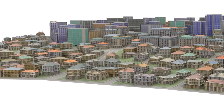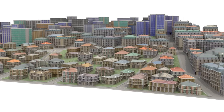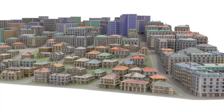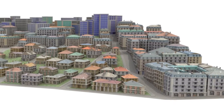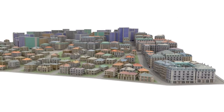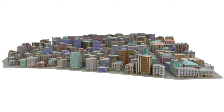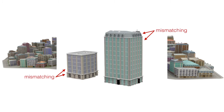Consider the task of modeling a city using an existing shape grammar that can generate a variety of different buildings. The initial result could look very chaotic, with random materials, a random height distribution, and mismatching styles within models.